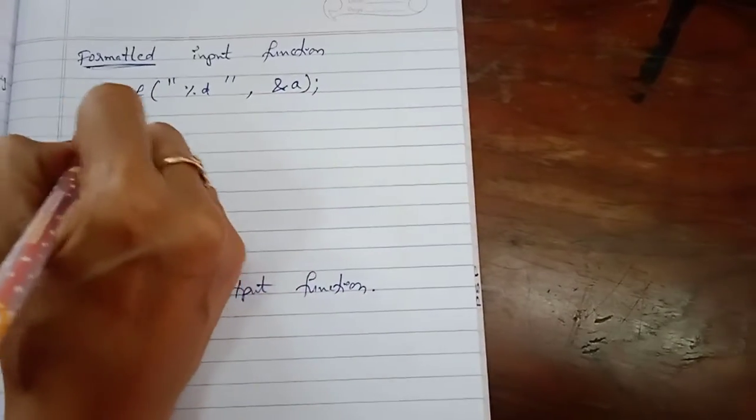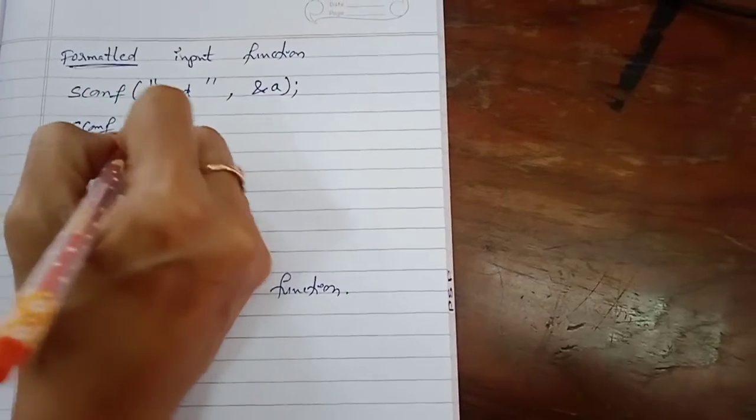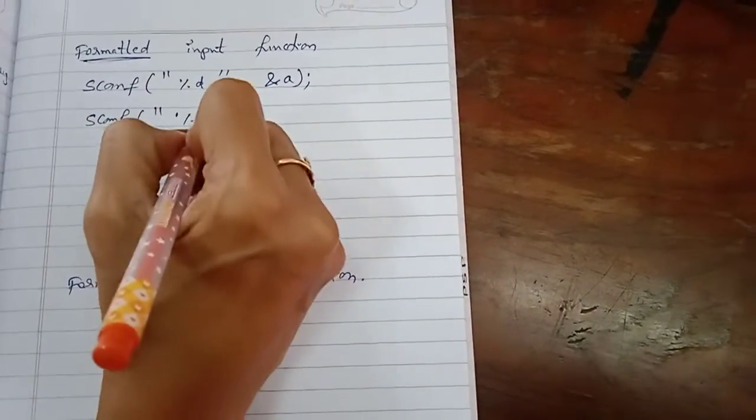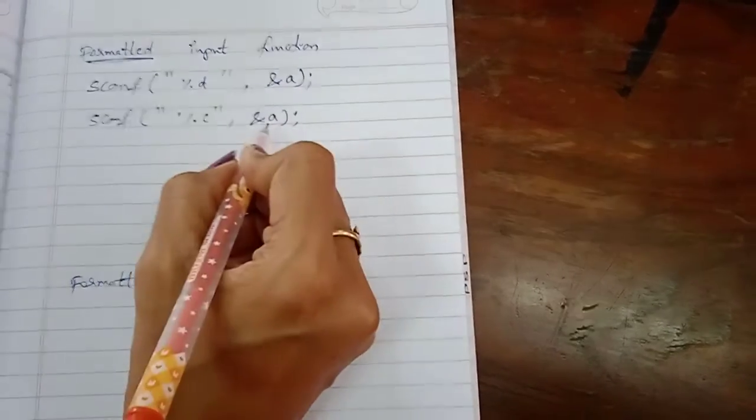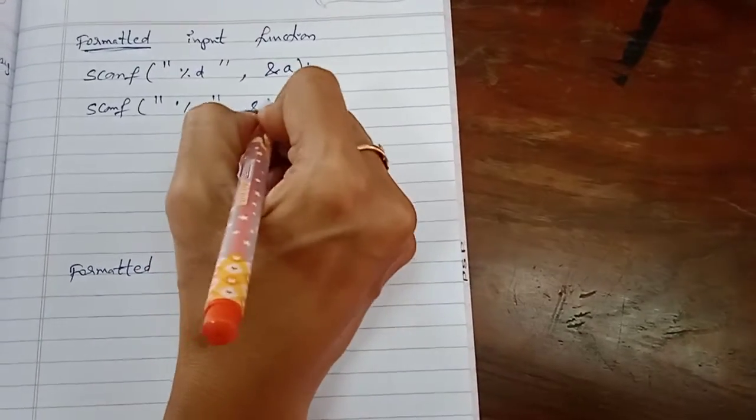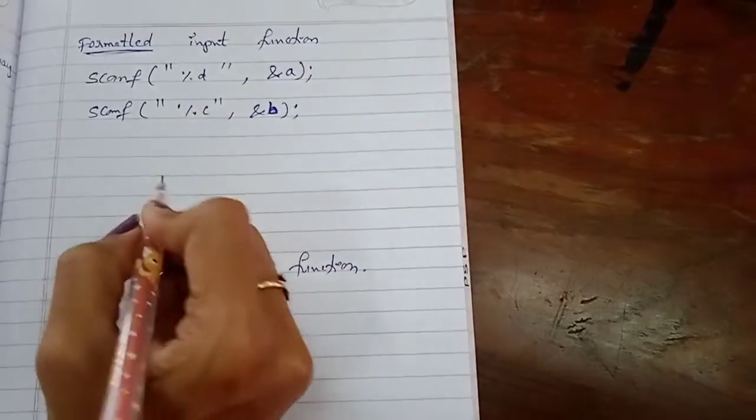Suppose if you are using character data type then you should use %c ampersand and the variable name. You can change the variable name, no problem. You can take it as B.